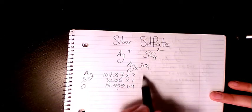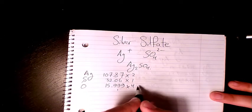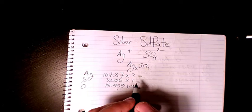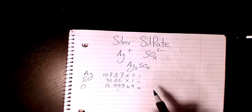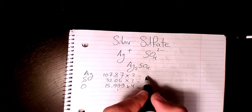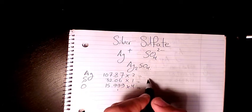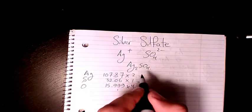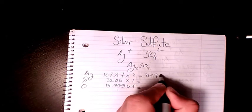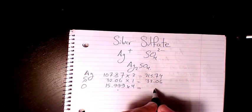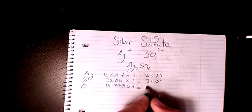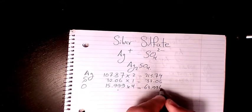Two for silver, one for sulfur, and four for oxygen. Then you multiply them. 107.87 times two is 215.74, then 32.06, and here we have 15.999 times four, which is 63.996.